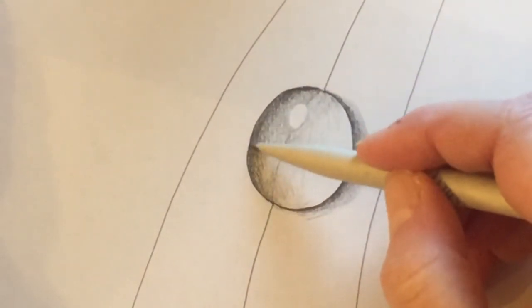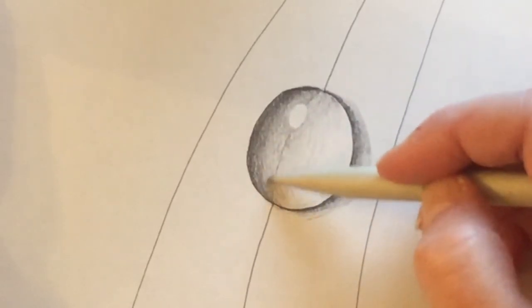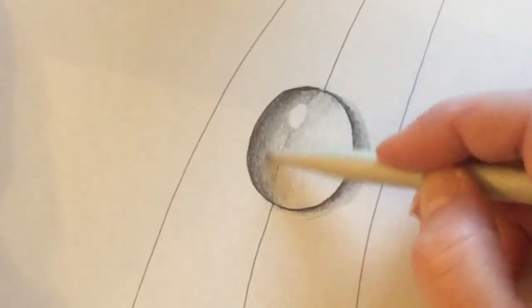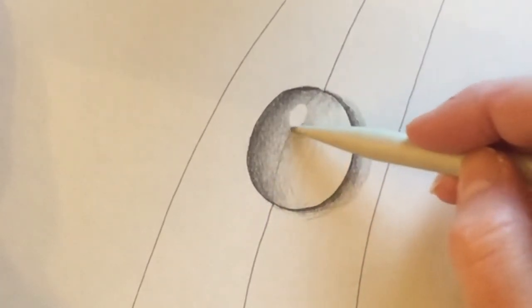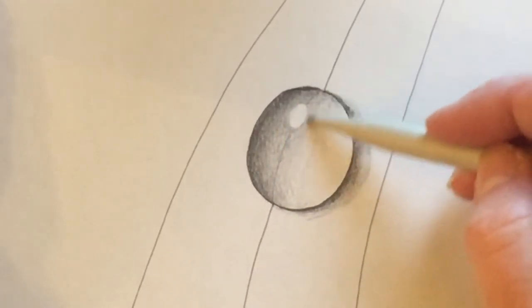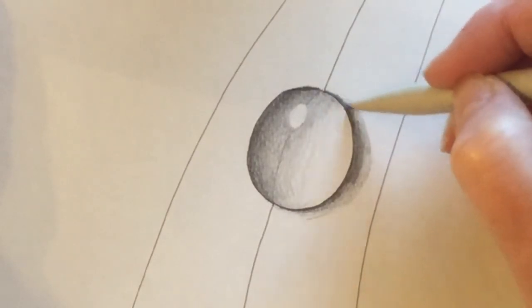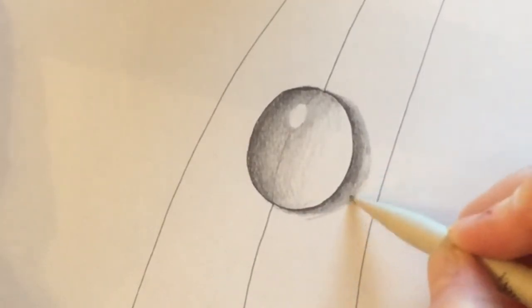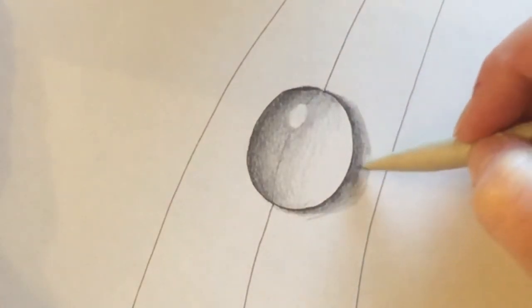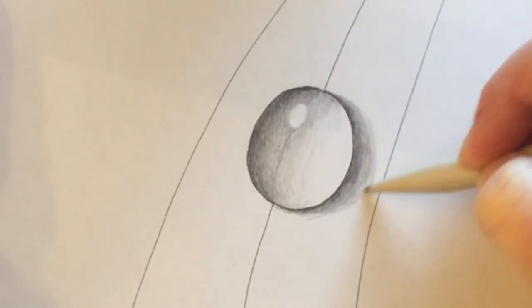I'm going to blend this a little bit just to show you the difference of what it looks like with the blender and without. I'm using a really light touch here because as you'll find out if you're using a soft lead it blends really quickly and it gets darker as you blend it. So now you can use what's left on the blender to make the shadow larger. You don't even have to add more lead or graphite.